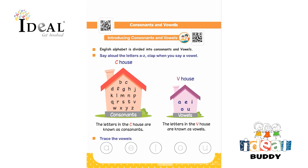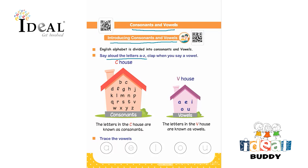Hello everyone. In this page, the child will be learning about consonants and vowels. The title is introducing consonants and vowels. English alphabet is divided into consonants and vowels. You have to read it out for your child, or make your child read it if they can. To identify consonants and vowels, say aloud the letters A to Z and clap when you say a vowel.